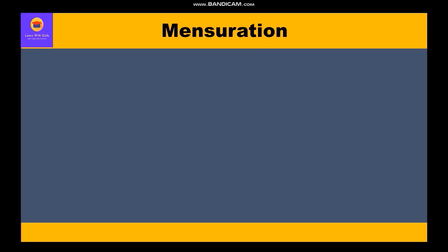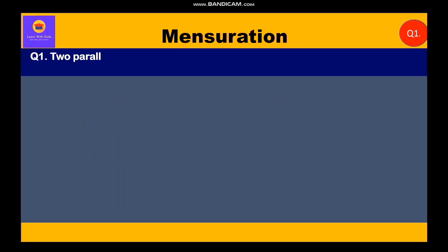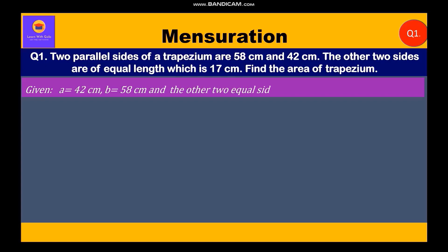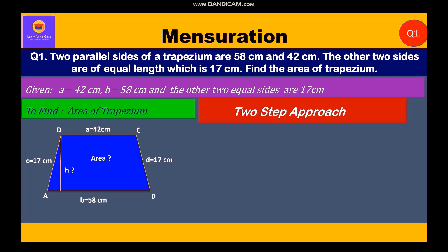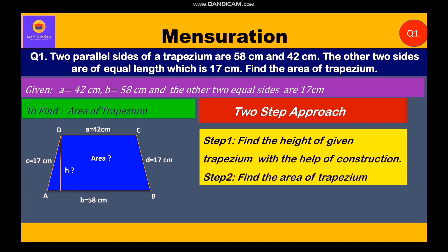Let us move to the first question in which two non-parallel sides are equal and height is not given. The question is: two parallel sides of a trapezium are 58 cm and 42 cm; the other two sides are of equal length, which is 17 cm. Find the area of the trapezium. Given: a = 42 cm, b = 58 cm, and the two equal sides = 17 cm. Two steps are involved — Step 1: find the height using construction; Step 2: find the area.